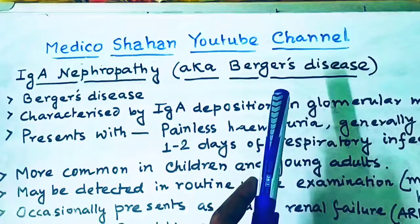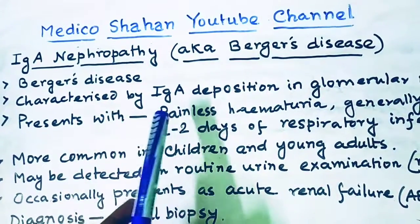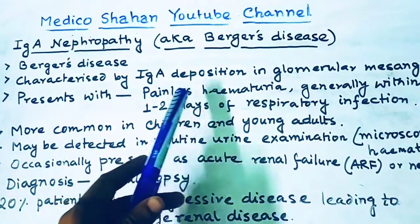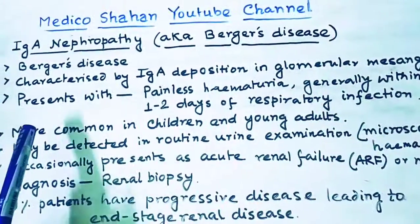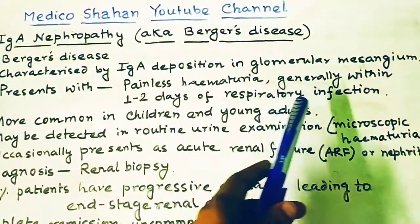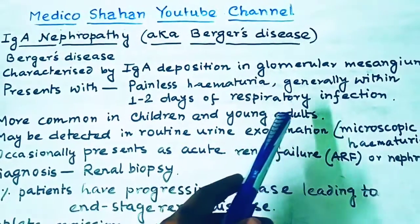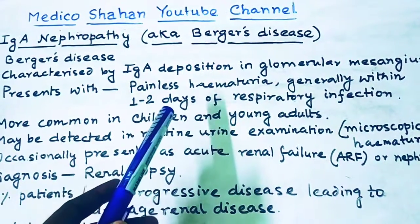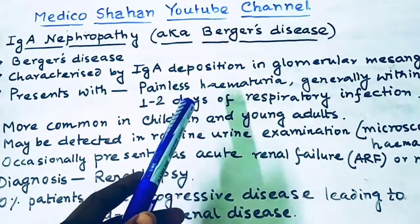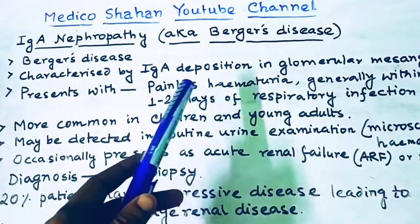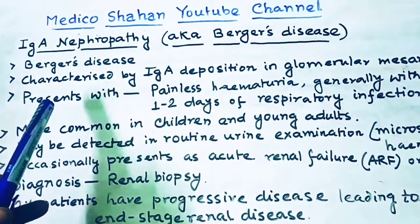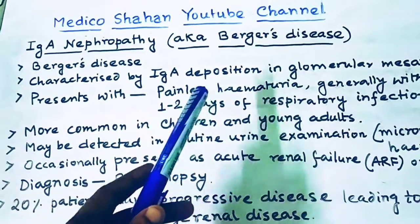IgA nephropathy is also known as Berger's disease. Berger's disease is characterized by IgA deposition in the glomerular mesangium. This presents as painless hematuria, generally within 1 to 2 days of a respiratory infection — red-colored urine with RBCs, but painless.